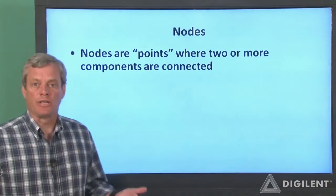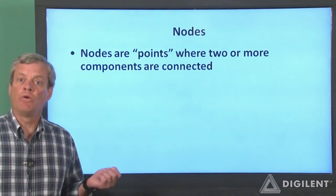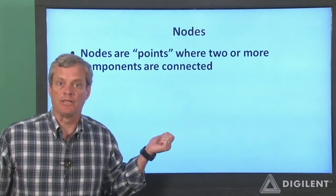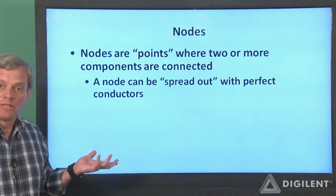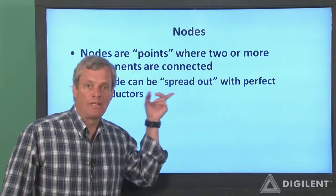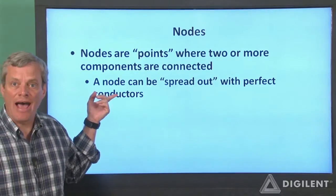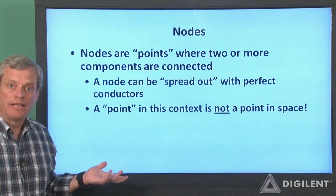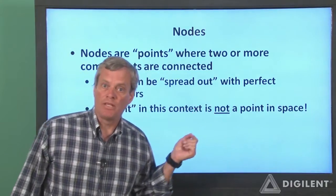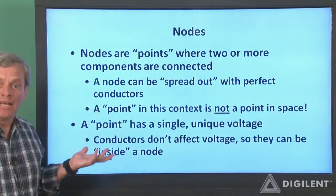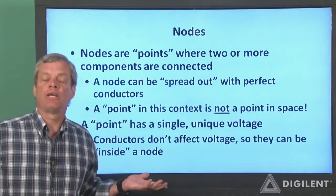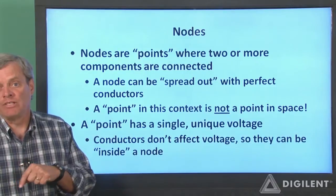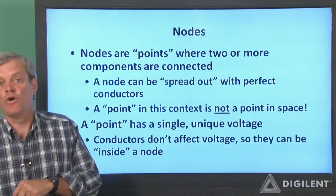Let's get back to our lumped parameter circuit. In a lumped parameter circuit, we get to define nodes. A circuit node is a point at which two or more circuit components are connected. However, since perfect conductors don't really count as circuit components, you can spread out a node with perfect conductors. So in this context, the term 'point' doesn't mean a point in space — it's a point in electrical terms, which means it's the entire area which has a single voltage. Since there's no voltage difference across a perfect conductor, we can have perfect conductors inside a node.